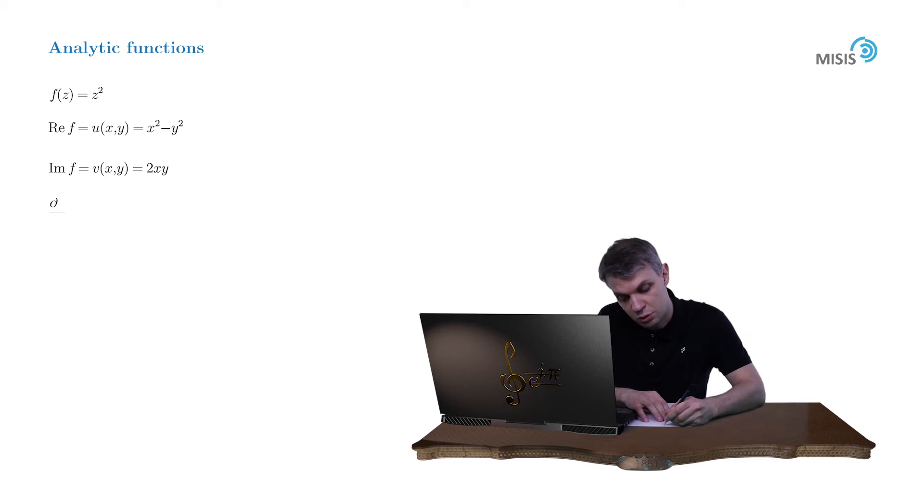So let's check du over dx is equal to 2x while dv over dy is equal to 2x and indeed they're equal. du over dy is equal to minus 2y while dv over dx is equal to 2y and indeed du over dy is equal to minus dv over dx.